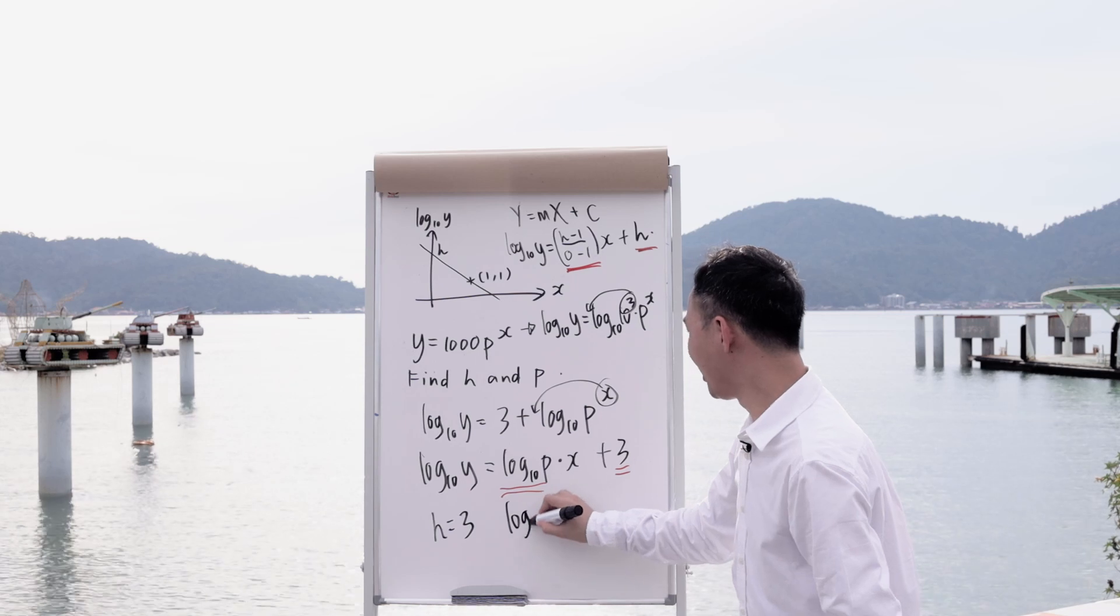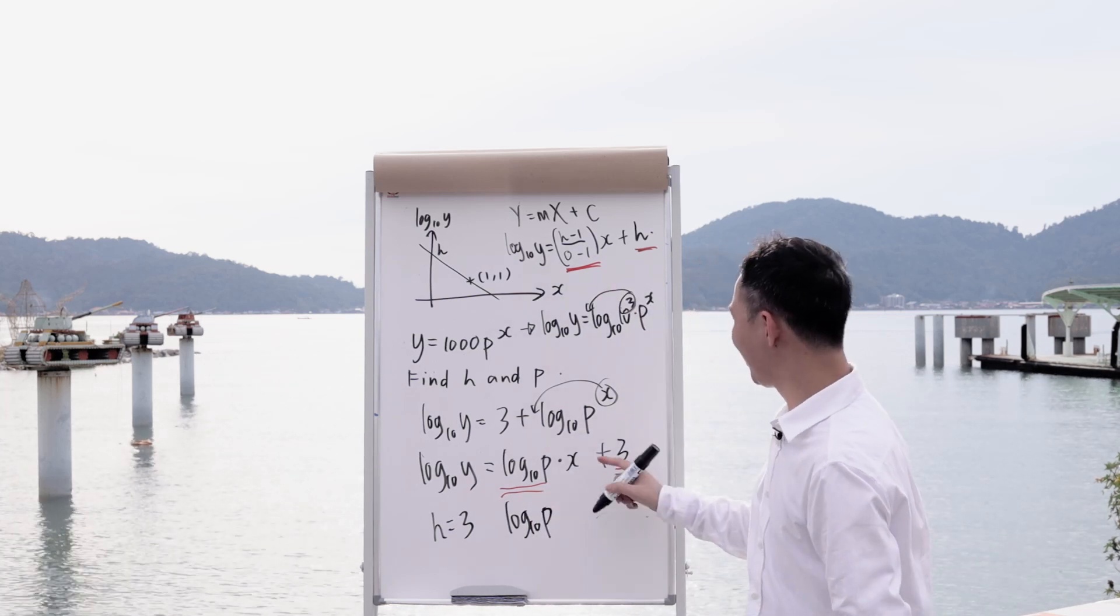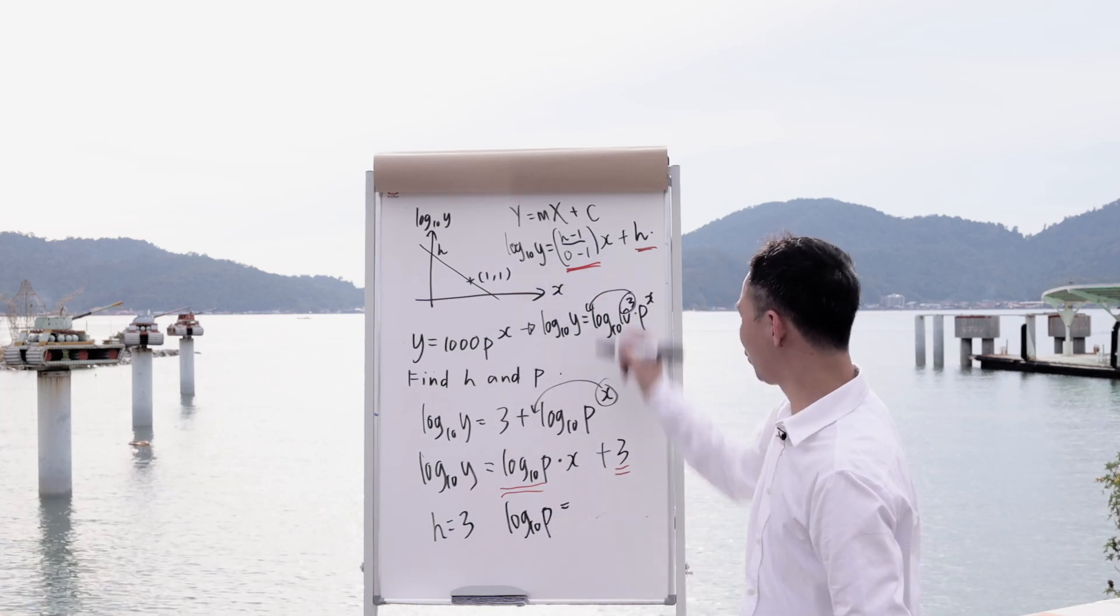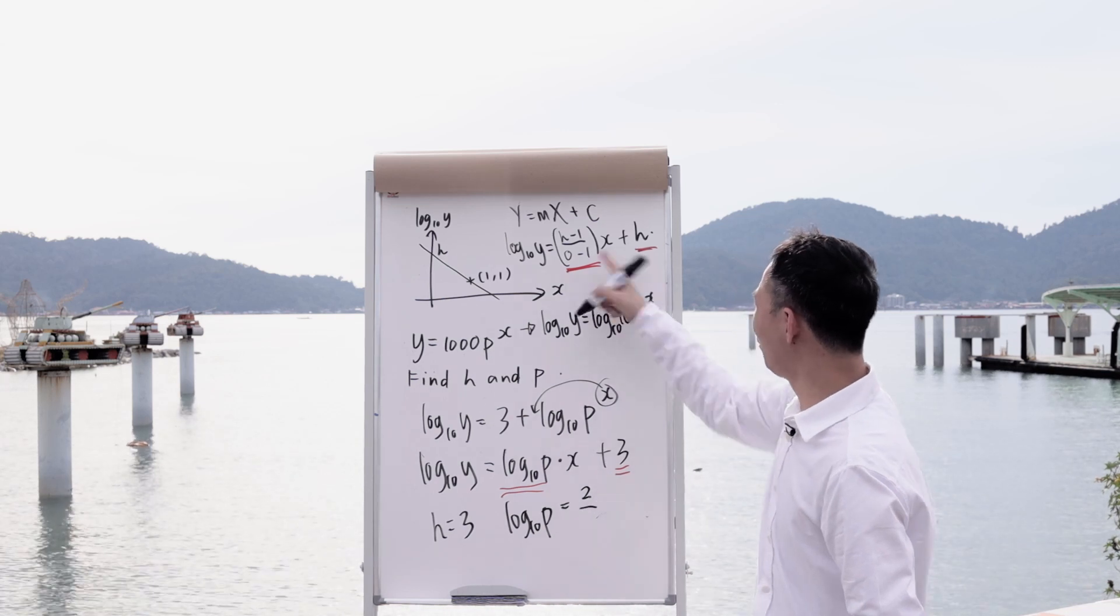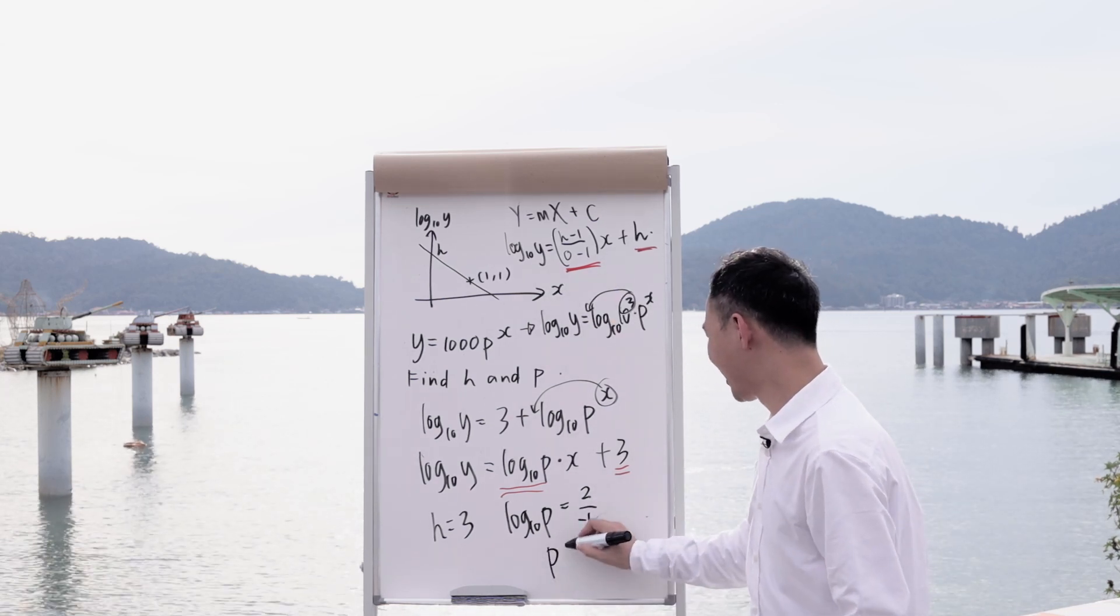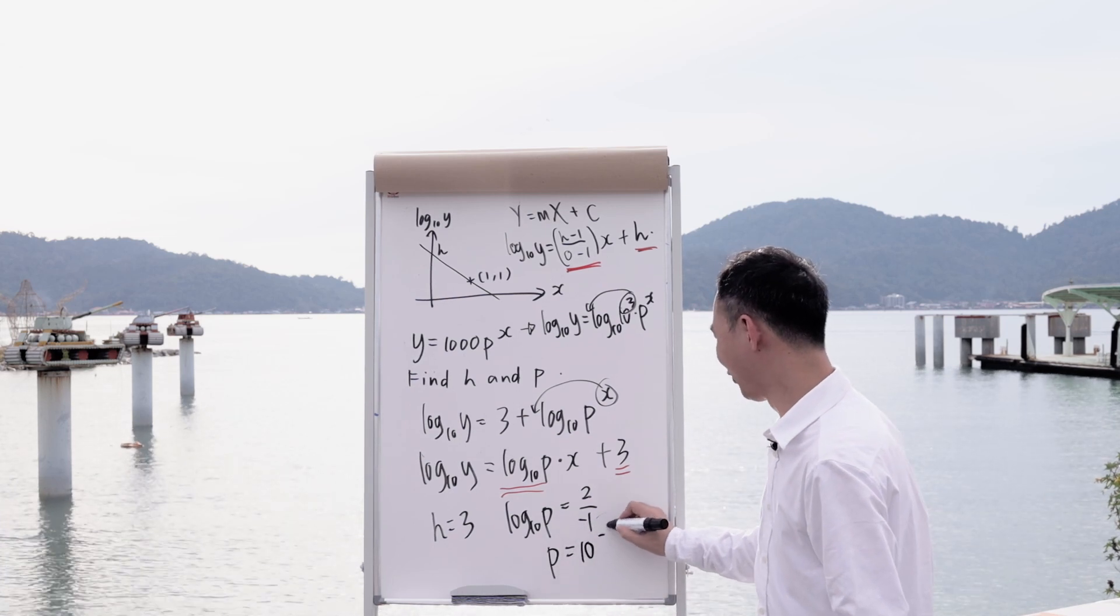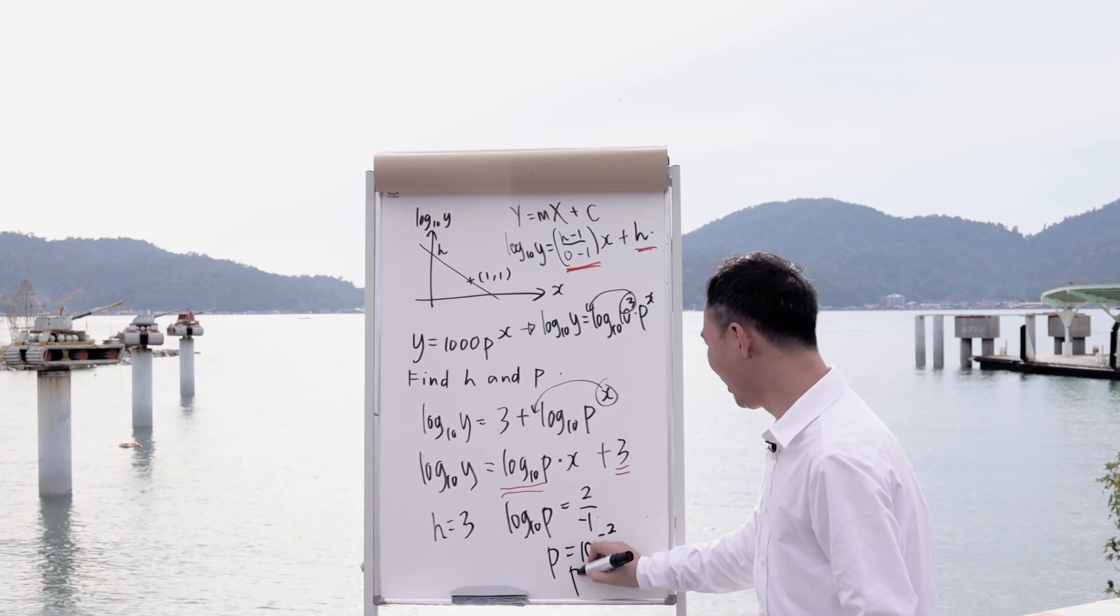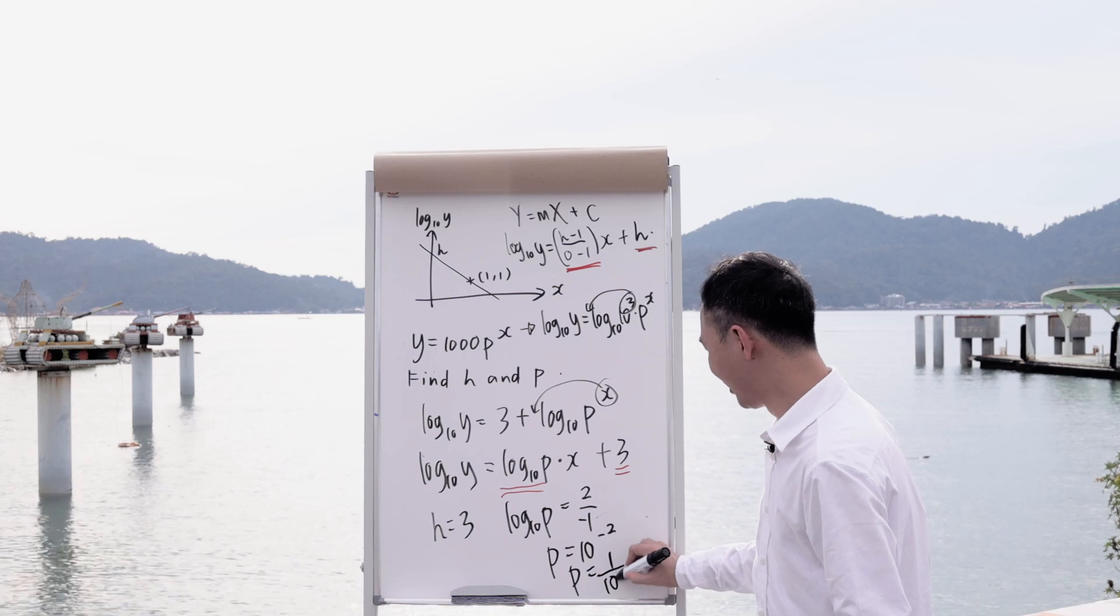Alright, and then I know my log 10p will equal to the gradient here. Since h is 3, it will be 3 minus 1, which is 2. And then 0 minus 1, you get negative 1. So my p basically equals to 10 power of negative 2. So my p will be 1 over 100.